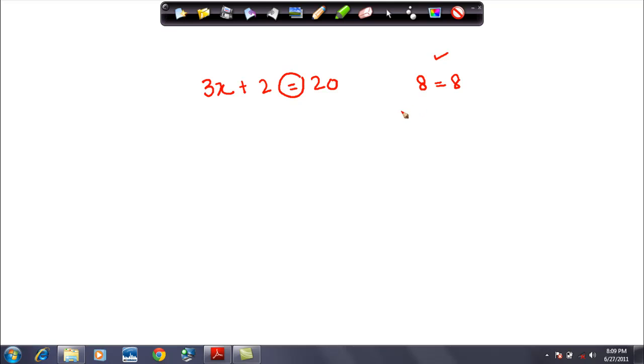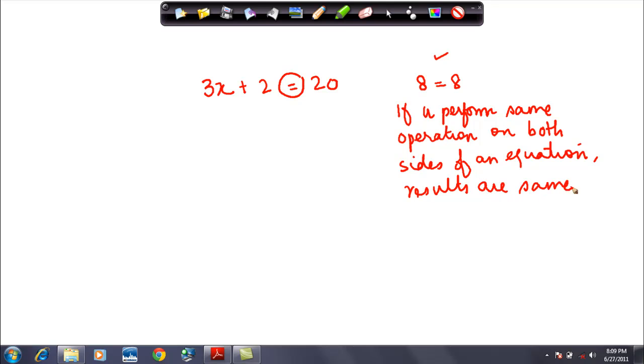Whenever you have these equal signs, the law of mathematics says that if you perform same operation on both sides of an equation, results are the same. So basically what happens? If you have eight is equal to eight, if suppose you add one to both of them, eight plus one, and on this side also I do eight plus one. In both the cases, the answer is nine and nine is equal to nine. If you add the same number, the results remain unchanged. The value of the equation remains the same.